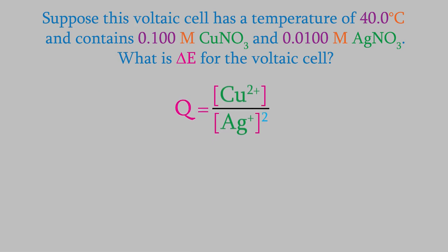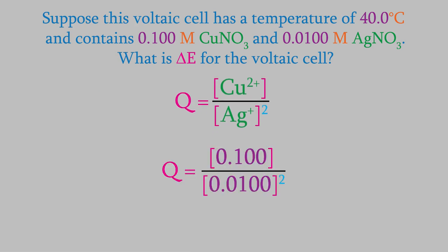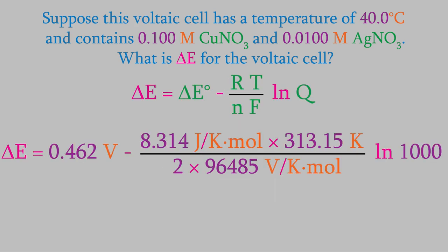Now, we just plug in our concentrations. Don't forget that the silver concentration gets squared. This gives us a value of Q of 1,000.